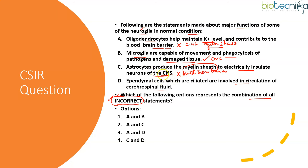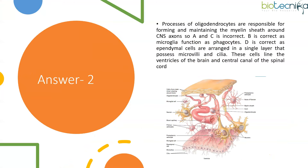Statement D — ependymal cells, which are ciliated, are involved in circulation of cerebrospinal fluid — is exactly correct. They line the ventricles through which CSF flows. So B and D are correct, meaning A and C are incorrect. The answer is option 2: A and C. You must be very clear with the functions of each neuroglial cell to solve this.